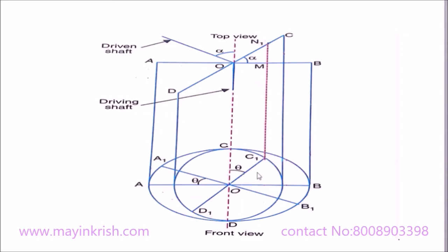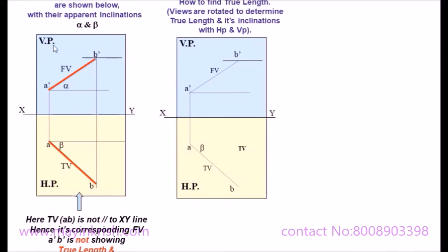To understand this concept, we need to apply engineering drawing principles — specifically the projection of lines. Looking at the present figure, the front view and the top view are connected with a straight line called a projector. The top view obtained here is a false length. We are going to make the false top view into a straight line, and then whatever projection we get in the front view will become the true length. The angle obtained from that true length is the true angle.